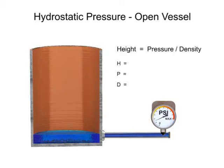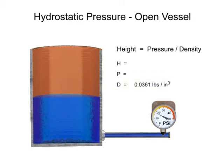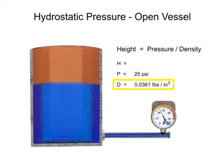To find pressure, a gauge is placed at the bottom of the vessel. With water having a density of 0.0361 pounds per cubic inch, the level of the fluid is calculated by dividing the head pressure by the density of the fluid.